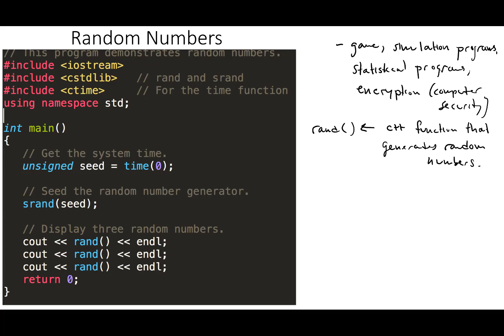This requires the CSTDLib header file. So the one issue with this RAND is each time that the program runs, it generates the same random number. So this will generate the same random number each time it runs.